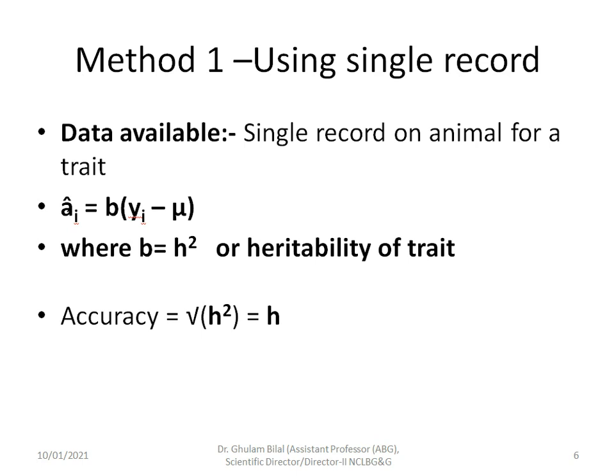Our first method uses a single performance record. The formula is the same: â_i = B × (y_i − µ), where B equals the heritability of the trait. The accuracy is simply the square root of B, which equals √h².